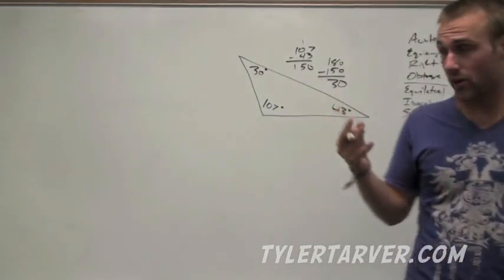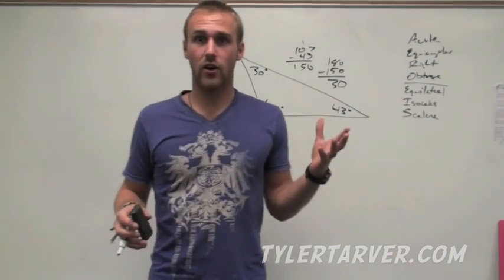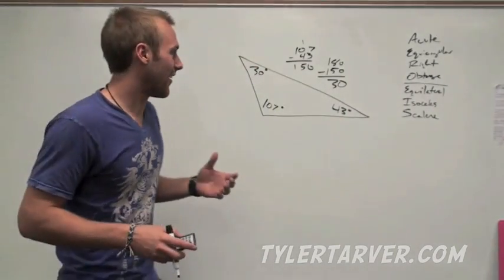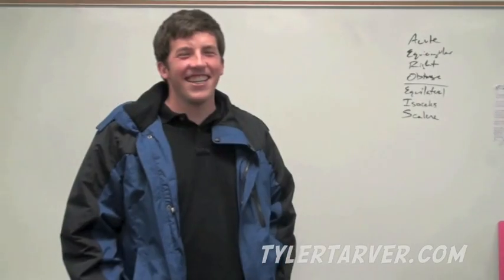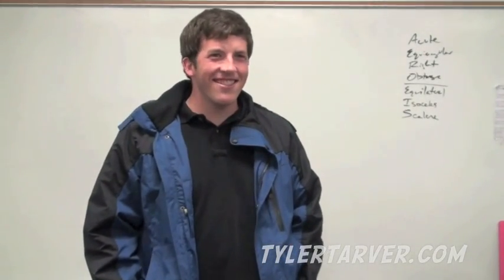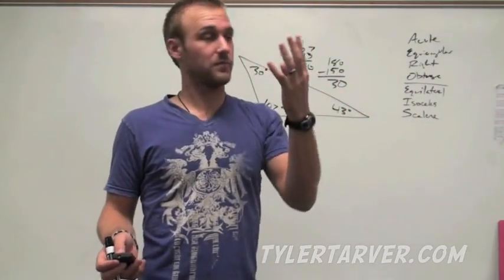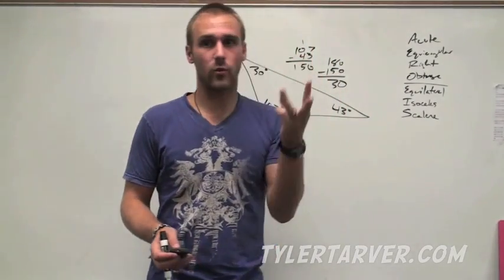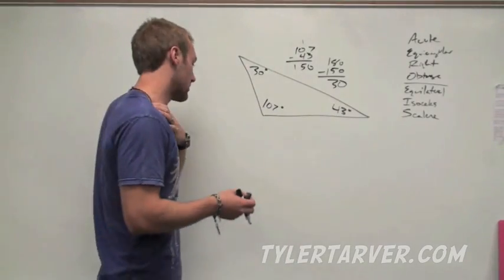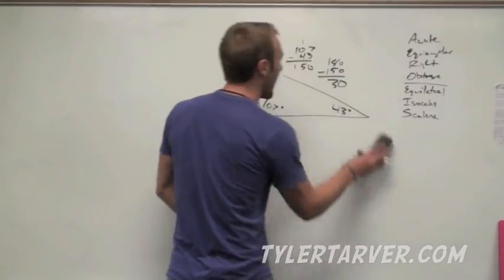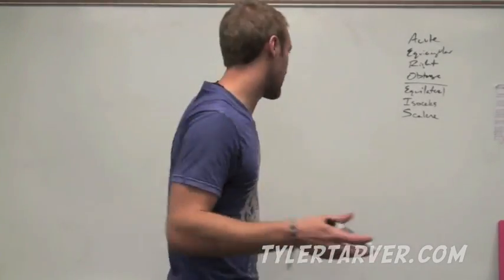All four types we just talked about — acute, equiangular, right, and obtuse — all have to do with the angle measures of a triangle. Now the last thing we're talking about has to do with the side measurements.